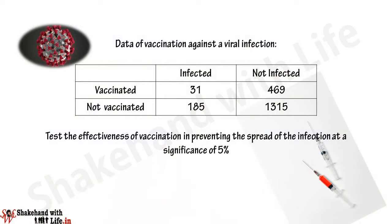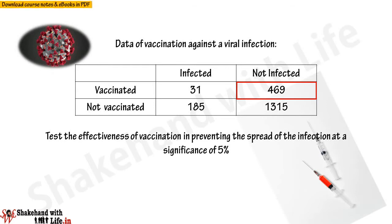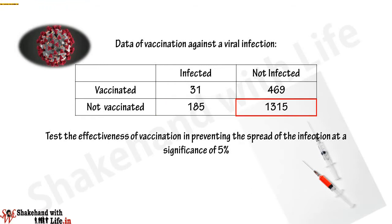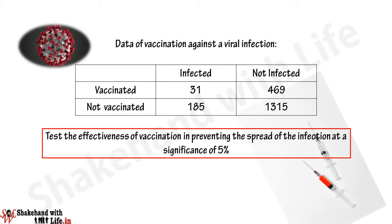Here is the data of an experiment based on vaccination of people attacked by a viral infection. In cell 1, the number of vaccinated people who are infected is 31. In cell 2, the number of vaccinated people who are not infected is 469. In cell 3, people who are not vaccinated but infected are 185. In cell 4, people who are not vaccinated and also not infected are 1315. On the basis of this data we have to conclude that the vaccine is effective to prevent the infection at 5% significance level.